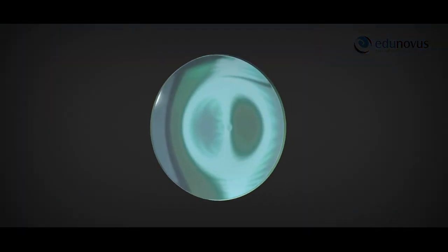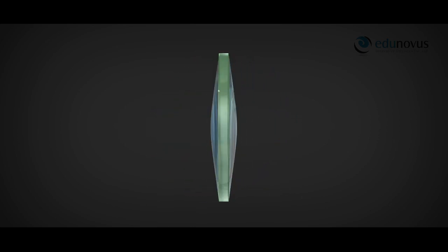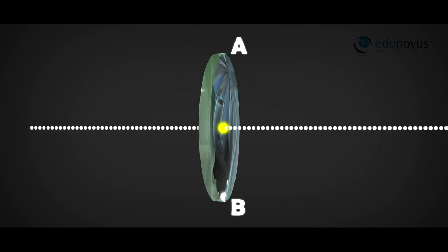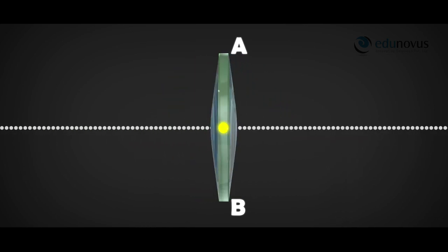A convex lens is also known as a converging lens. It is thick in the middle and thin at the edges. The diameter of the circular edge of the lens is called aperture — here, AB is the aperture. When a ray of light passing through a particular point on the principal axis goes undeviated, that point is called the optical center, represented by O.